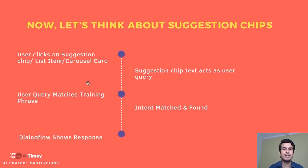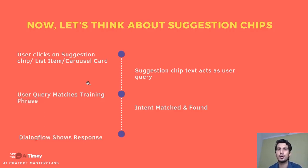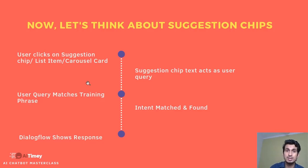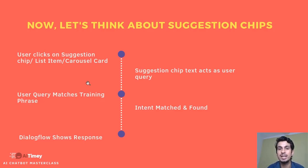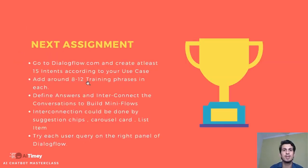We also need to revisit suggestion chips from the last session. Each suggestion chip or list item or carousel card that you tap on turns into a user query. That user query is then matched to the training phrases, which catches the right intent, and the answer of that intent is shown to the user. This is how you can connect various intents using suggestion chips — users get the feeling of clicking through to different answers, and that is how the conversation flow continues.